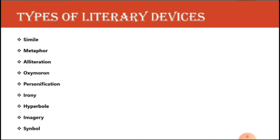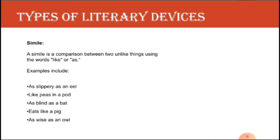Today we are dealing with some types of literary devices selected for you which come under your syllabus: simile, metaphor, alliteration, oxymoron, personification, irony, hyperbole, imagery, and symbol. These are selective literary devices — there are many in number but in your BS syllabus these are enough. The first one is simile.